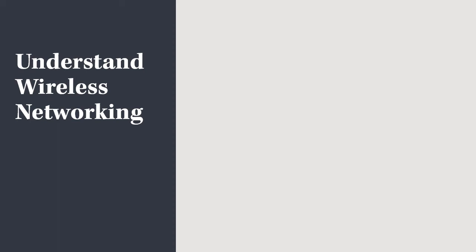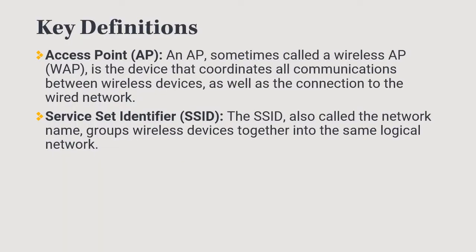In this video we're going to cover the Understand Wireless Networking objective in the MTA Networking Fundamentals exam. Some terms that we want to define: an access point, sometimes called a wireless access point or WAP, is a device that we use to coordinate communications or connect other wireless devices. Then we have a Service Set Identifier or SSID.